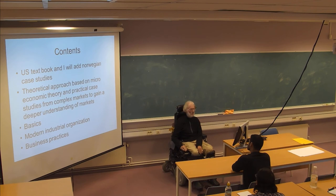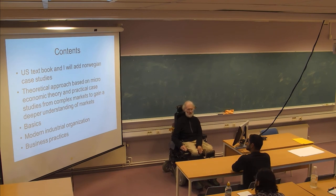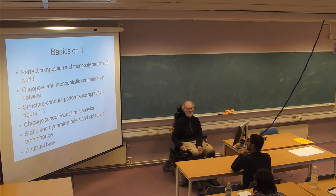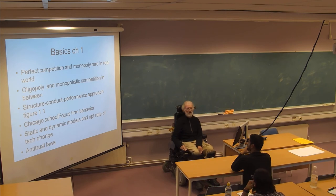Last time I said that we have three different chapters. We start with basics, modern industrial organization and business practices, and we move now a little bit faster with picture two from the textbook. The author discusses perfect competition, and all of you have had the course in microeconomics, and perfect competition is not that difficult to understand.